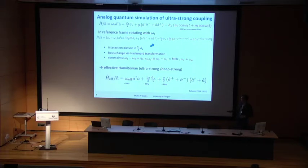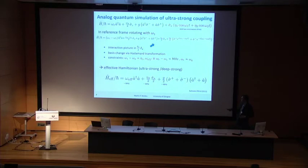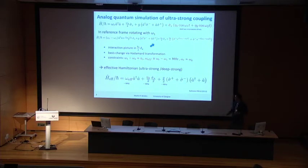We can engineer the drives so that the effective transition frequencies are on the order of megahertz for both the harmonic system and the qubit system. Importantly, the coupling strength is only reduced by a factor of two. In our circuits we typically have coupling on the order of 10 MHz, so we can achieve ultra-strong coupling by choosing the applied drives properly.